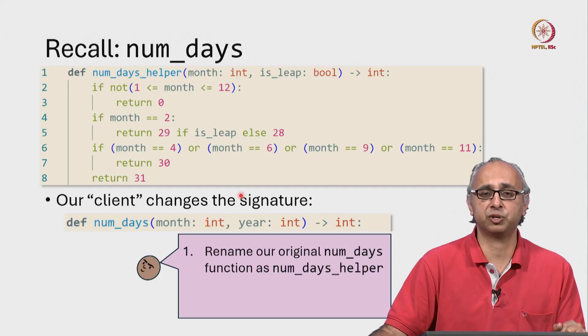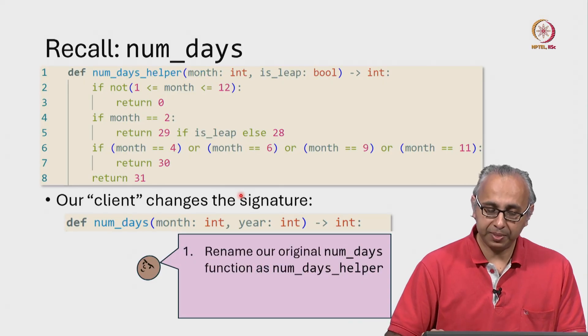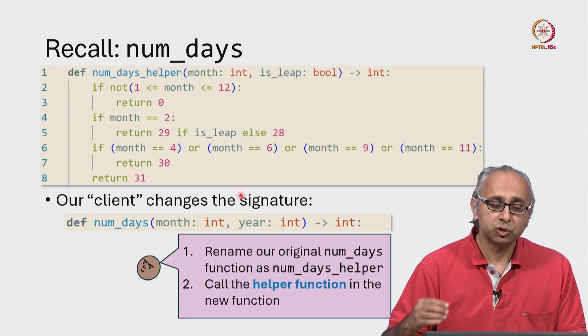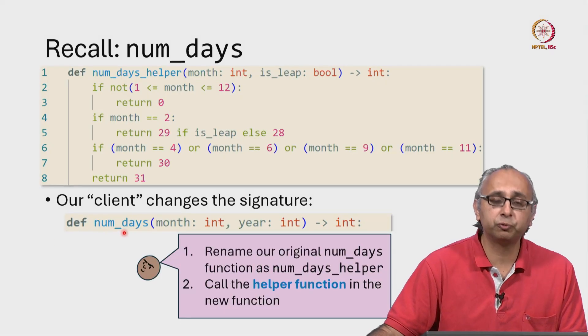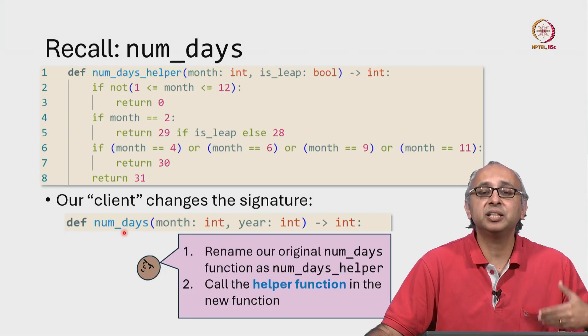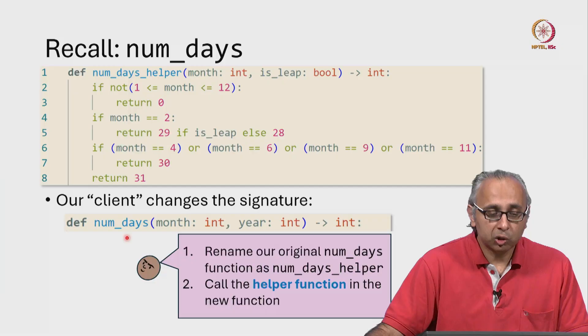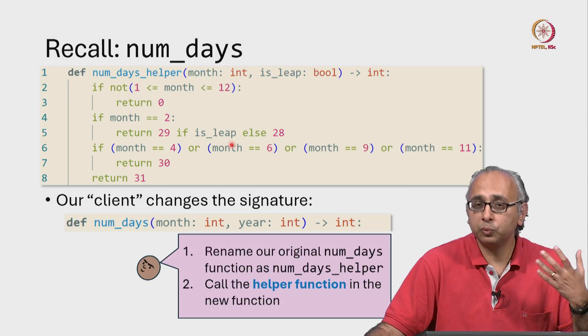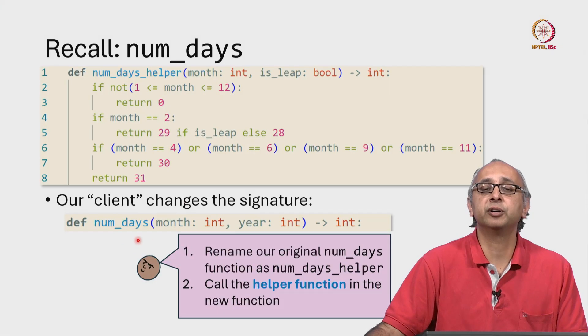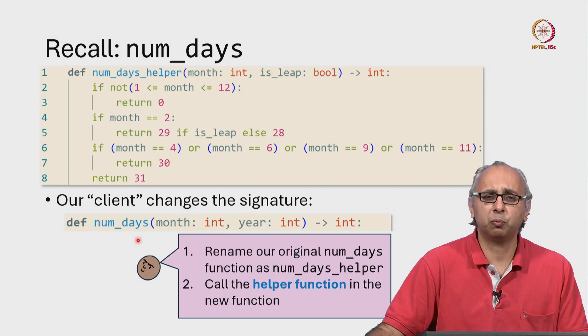And then our friend says, well, you've got that helper function. So now when you're writing the code for this function, at the appropriate point, call this helper function inside the body of this function. Now what would this look like? Well our friend is prepared to write the code for us. So let's see our friend's code.